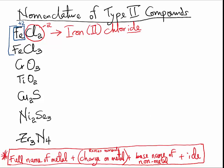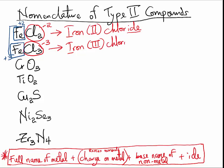In the same way, you can name FeCl₃. Chlorine, as we already saw, will have a charge of minus 1. There are three chlorine atoms in FeCl₃, so the total negative will be negative 3, which means the total positive must be positive 3. So the name of FeCl₃ will be Iron(III) chloride. It is very straightforward if you calculate the charges before you name Type 2 compounds.